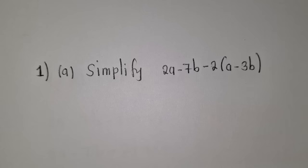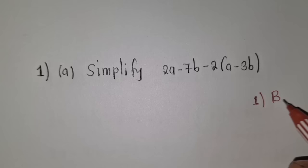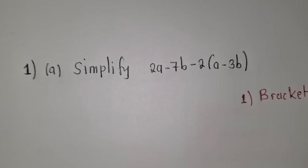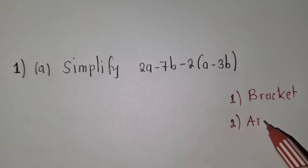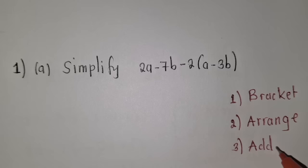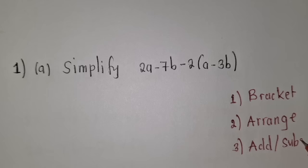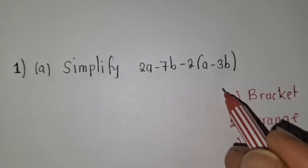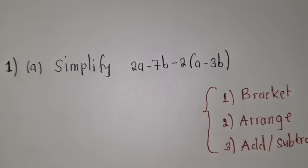For the first question, we needed to consider three steps. Step number 1 is to get rid of the brackets. Step number 2, we needed to arrange the work. Whenever you see a question talking about simplification, think about these three steps. The third one is to add or subtract. So these are the three steps for question 1.